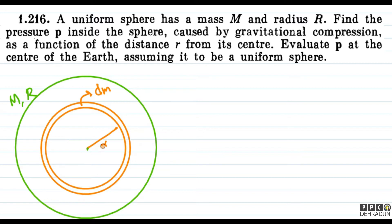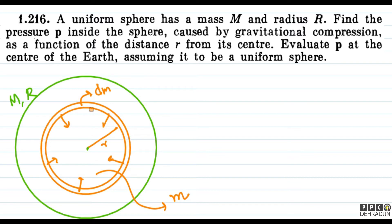Inner solid sphere jiski radius small r hai, uske mass ko hum small m lete hain. Ab dekho ye jo small r radial distance tak ka solid sphere hai jiska mass small m hai, aur bahar jo ek chhota sa shell socha hai jiski thickness dr hai, voh obviously usse apni taraf kheenchega. Lekin ye sphere kahin ja nahi raha, continuously compress nahi ho raha, iska matlab ye shell equilibrium mein hai.